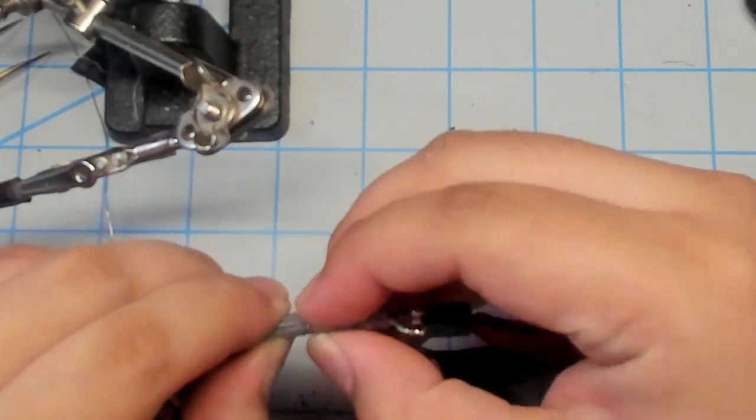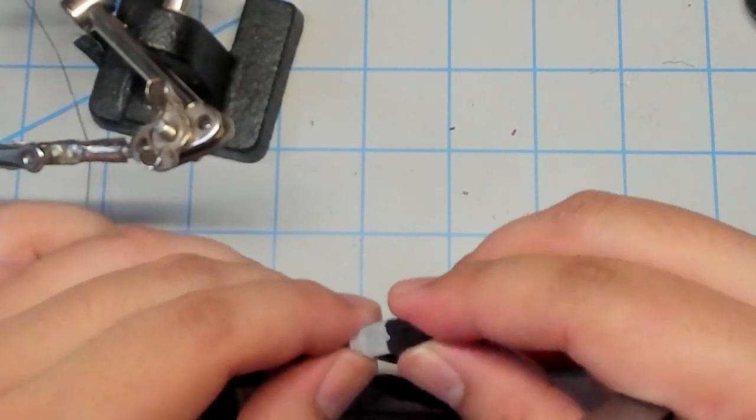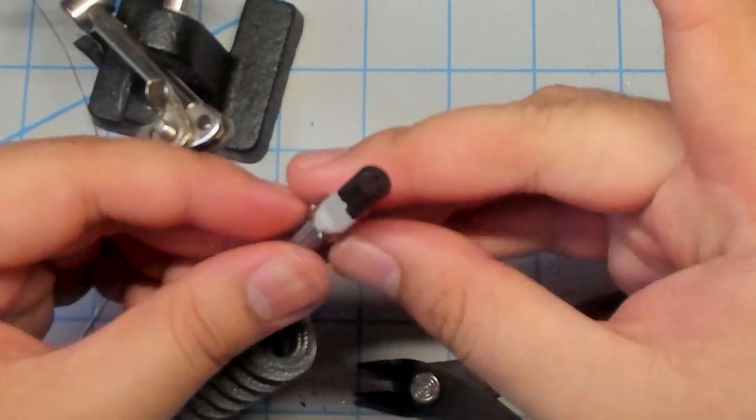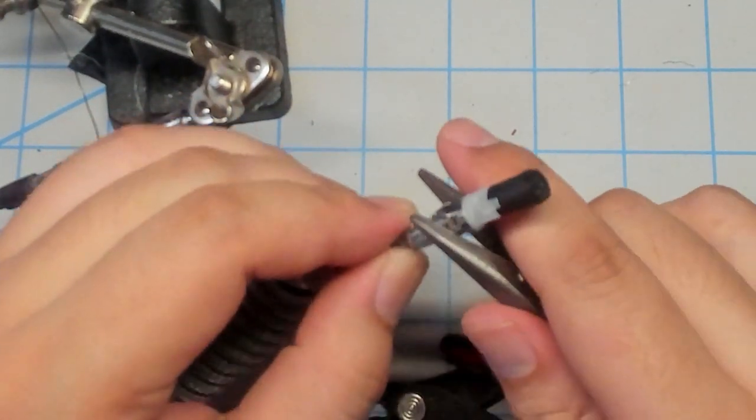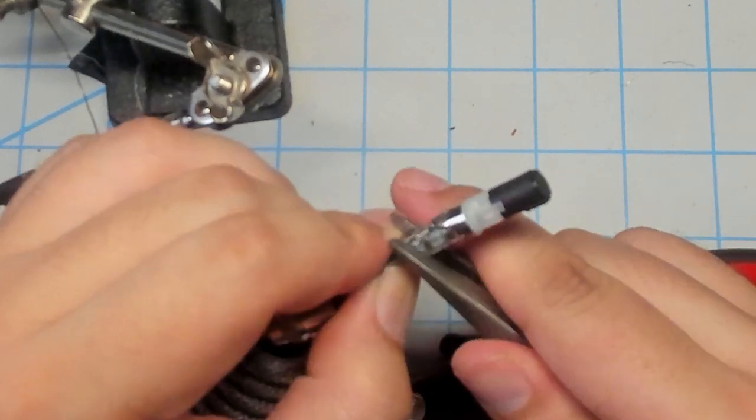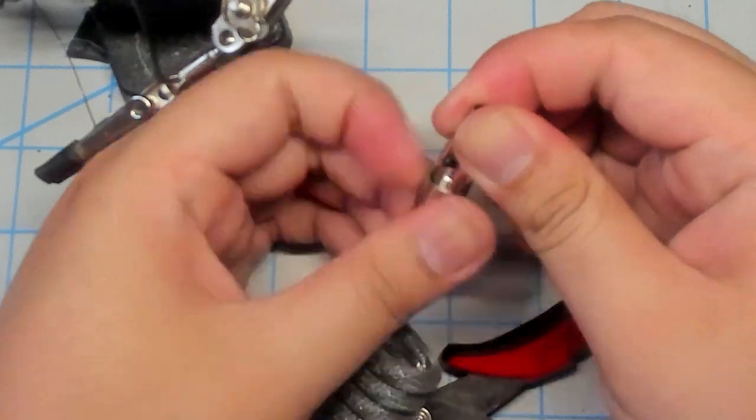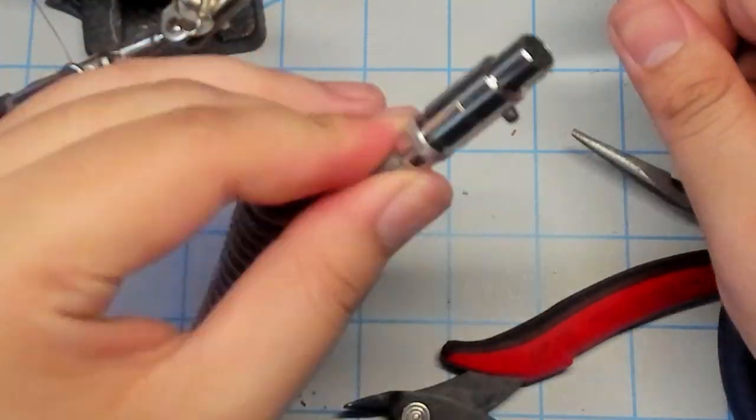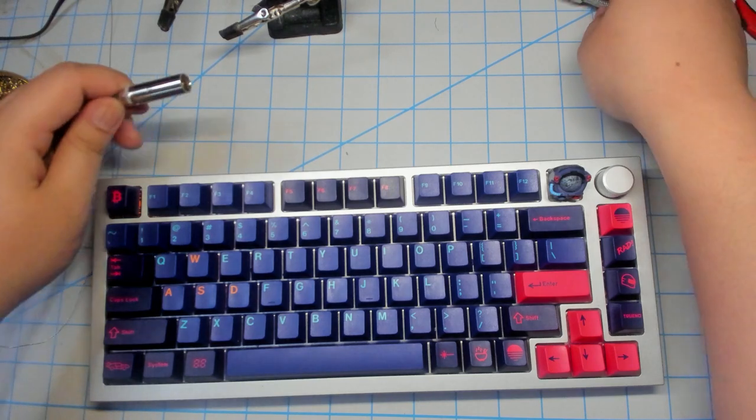So now that the male end is done we'll do exactly the same thing on the female side of the cable. It's always good to test out your cable right after soldering but here's me testing out the finished cable with the GMMK Pro.